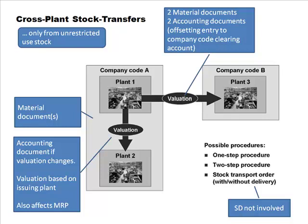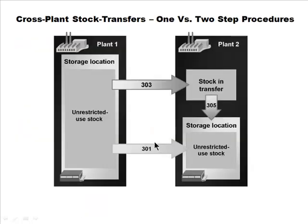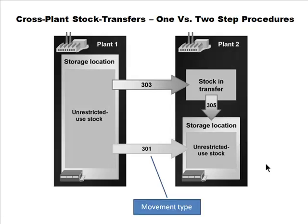So that's a possibility — it could be done with just one material document. We'll keep it as pending and verify. For cross-plant transfers, we have the one-step and two-step procedure, and everything else is the same as before — just a different movement type is used.